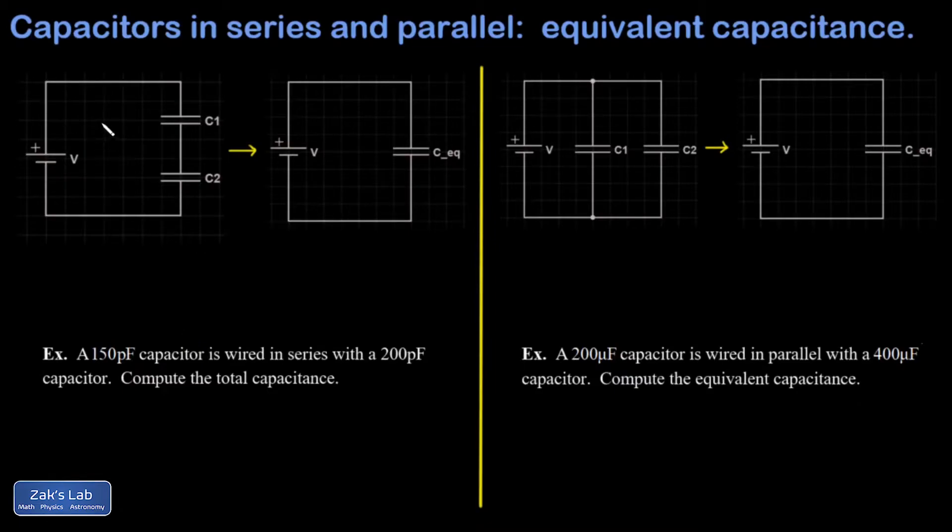On the left we have a picture of two capacitors in series, and what I'm going to do for clarity is label a couple nodes in the circuit. I'm going to call these A and B, and we know that C1 and C2 are in series because there is no other branch connecting A and B except to go through both of those capacitors. So that's what defines a series combination.